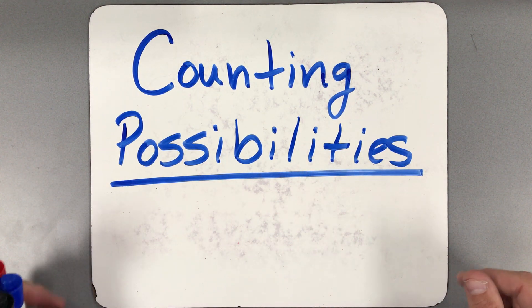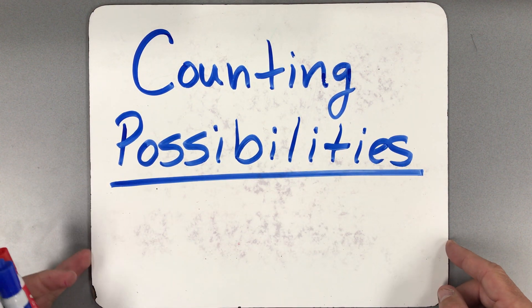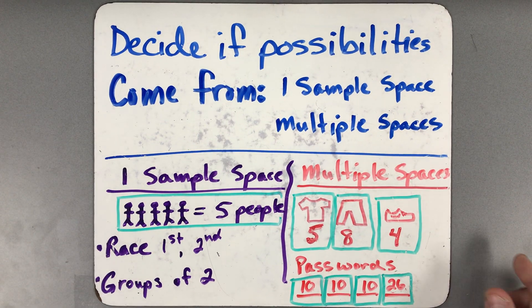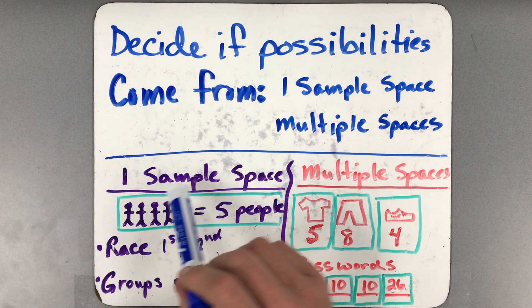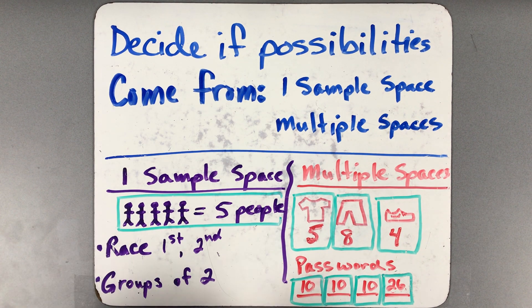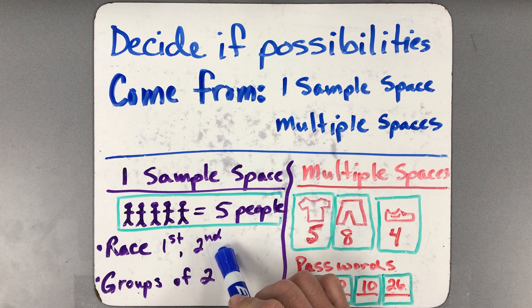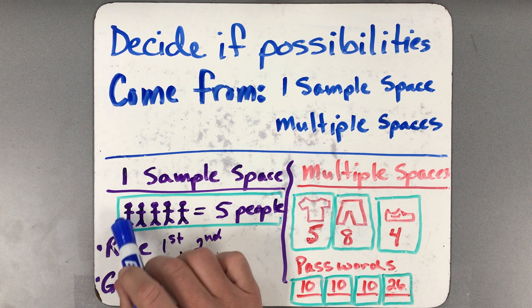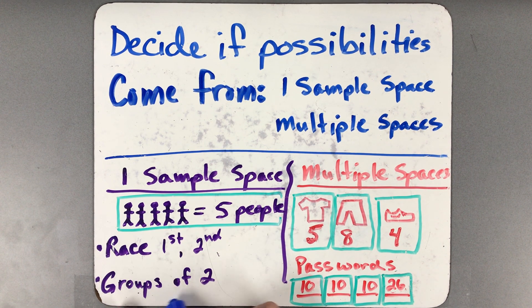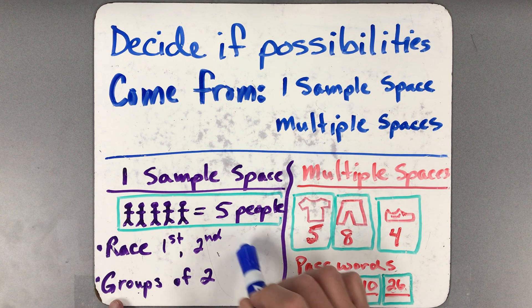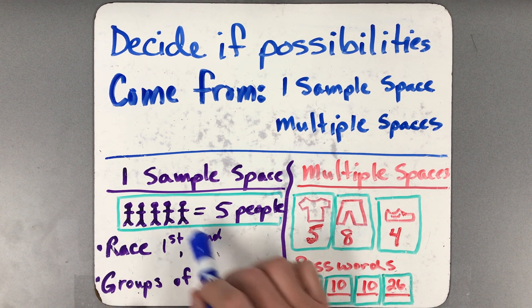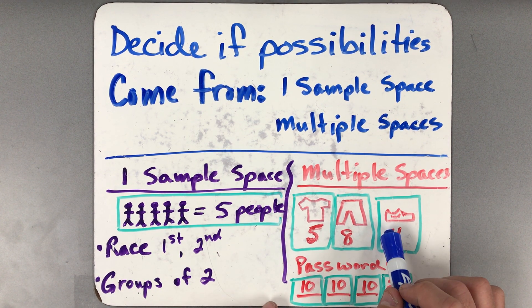The first thing when we're trying to figure out how to count possibilities is to think about the sample space you're working with. Are you working with one sample space or multiple sample spaces? If you have one sample space, like five people, and I ask you how many different ways could they finish a race where the order is important, or how many different groups of two could I make where the order is not as important, those calculations with one sample space are done differently than when you have multiple sample spaces.